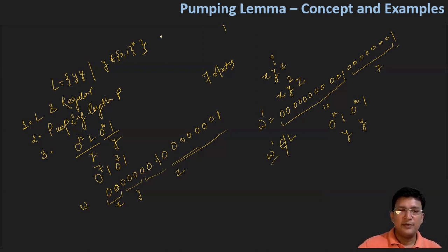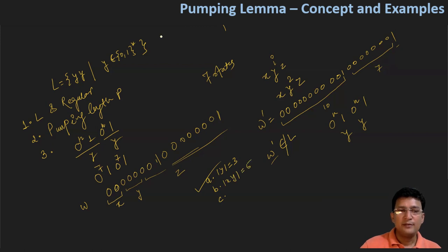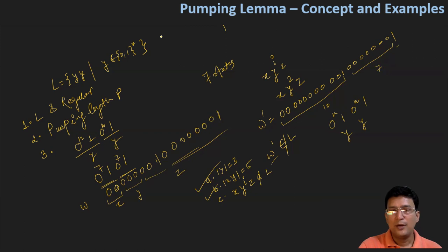We have proven by contradiction that since W' is not part of language L, the given language cannot be regular. Checking the three conditions: the length of Y is three, which is greater than zero — correct. The cumulative length of X and Y is five (X length is two, Y length is three), which is less than or equal to P — correct. But X · Y^i · Z is not part of language L. So we have proven by contradiction that this language is not regular. I hope it makes sense — we will take more examples in the next lecture to understand the pumping lemma in depth. Thanks for watching.